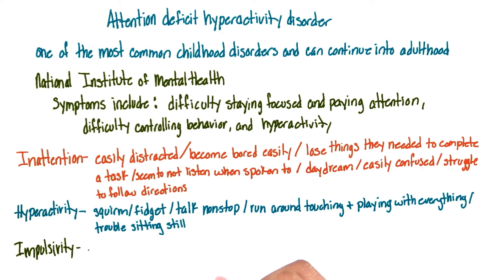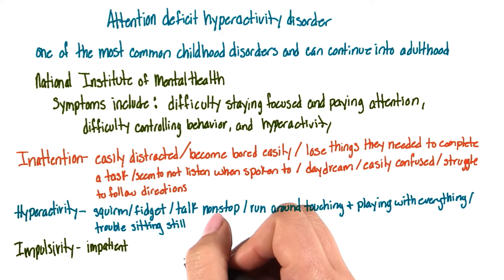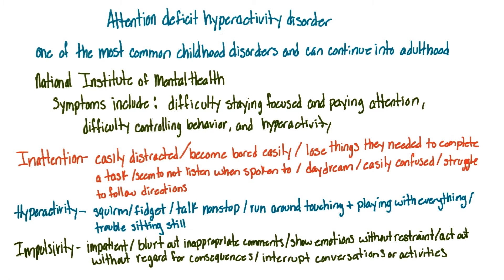Now let's look at impulsivity. Symptoms of impulsivity means a person may be very impatient. They may blurt out inappropriate comments or show their emotions without restraint, and they may often act out without regard for consequences. They may have difficulty waiting for things that they want, and they may interrupt people's conversations or activities.